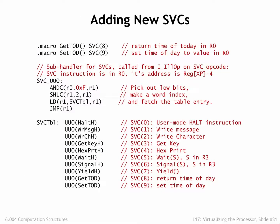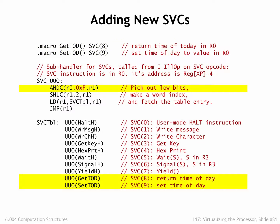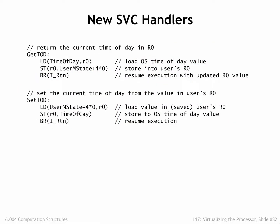Adding new SVC handlers is straightforward. First, we need to define new SVC macros for use in user mode programs. In this example, we're defining SVCs for getting and setting the time of day. Since these are the 8th and 9th SVCs, we need to make a small adjustment to the SVC dispatch code and then add the appropriate entries to the end of the dispatch table. The handler can access the value of the program's R0 by looking at the correct entry in the user-state temporary holding area. It just takes a few instructions to implement the desired operations.